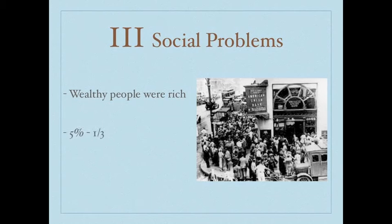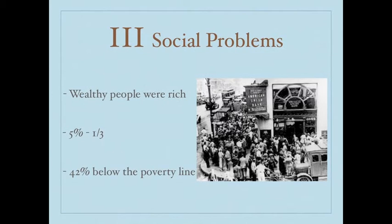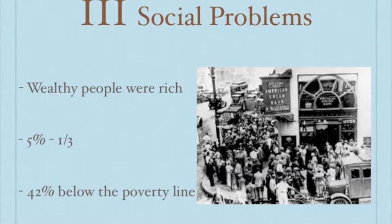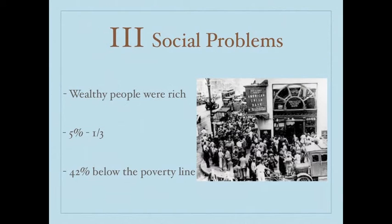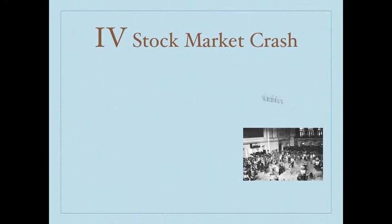The third problem I found was social problems. People who were wealthy in America were extremely rich, but only 5% of the American population shared a third of the wealth, while 42% were living below the poverty line.